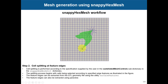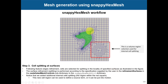SnappyHexMesh adds refinement at features - edges - where the refinement level might be about four, meaning the reference cells are split four times. Feature edges are extracted using the surfaceFeatureExtract utility or directly from ParaView/ParaFoam. You can also add refinement at surfaces, and control refinement based on curvature. Everything is done with reference to the background mesh.